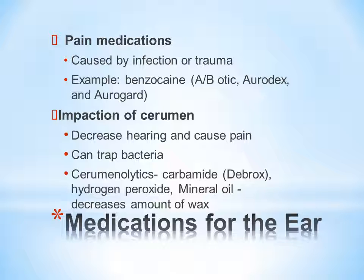Ceruminolytics, like carbamide peroxide — brand name Debrox — are earwax softeners. Mineral oil and hydrogen peroxide can also be used to decrease the amount of wax. Eardrops are the first line of defense and are usually prescribed for three to five days initially to soften wax and aid in removal.